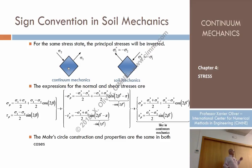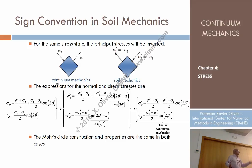According to the soil mechanics criterion, what would these be? Sigma 1 would become minus 3 and sigma 2 would become plus 3. So both principal stresses change sign according to the soil mechanics criterion.